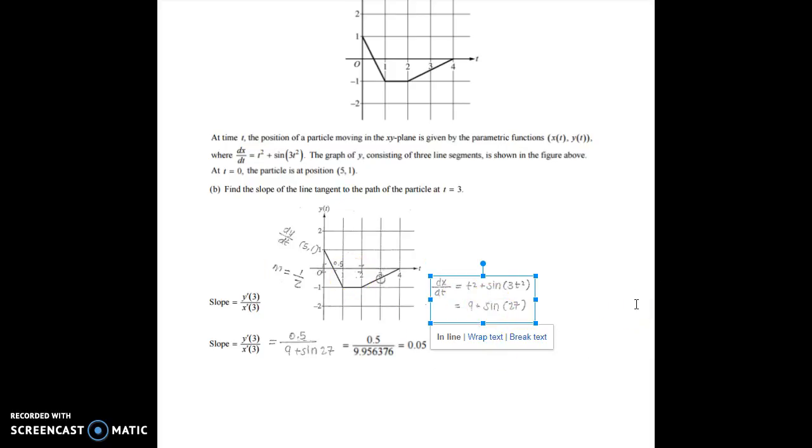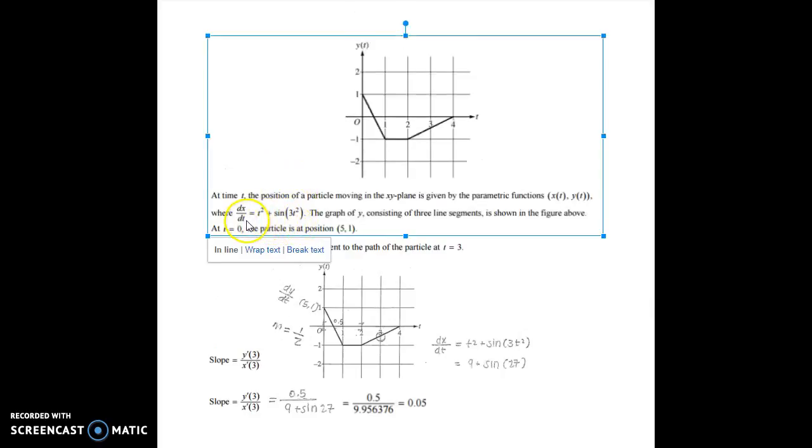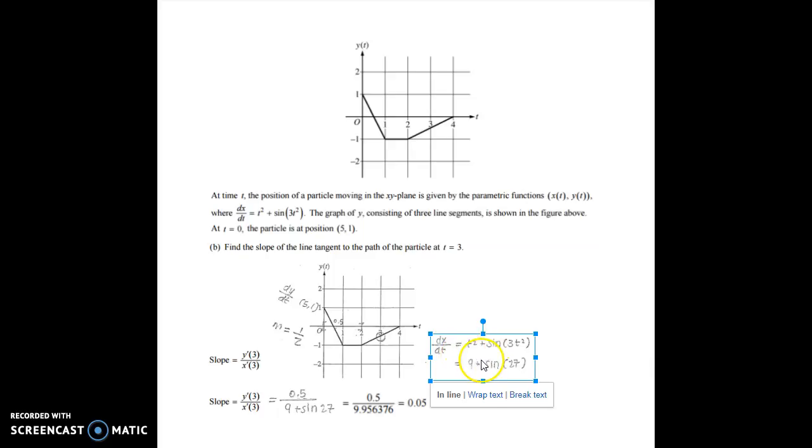Where it says t squared plus sine of 3t squared. So all you have to do is plug in your 3, and you get 9 plus sine of 27. Then you simplify that into 0.5 from your y divided by 9.95, and you end up getting 0.05.